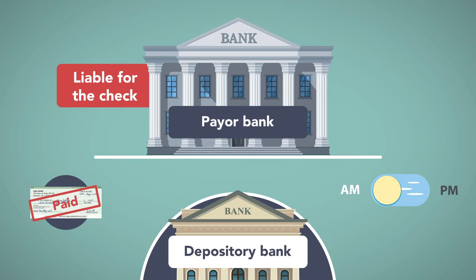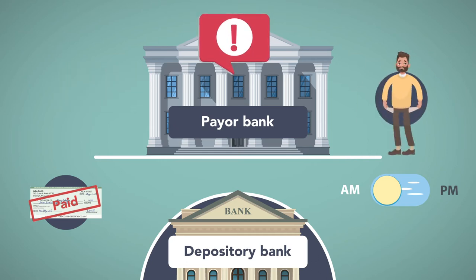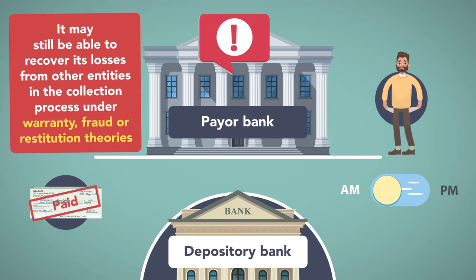If the payer bank misses the midnight deadline, the check is deemed to have been finally paid and the payer bank incurs liability for the check. If the payer bank later discovers that there were insufficient funds in the drawer's account, it may still be able to recover its losses from other entities in the collection process under warranty, fraud, or restitution theories.